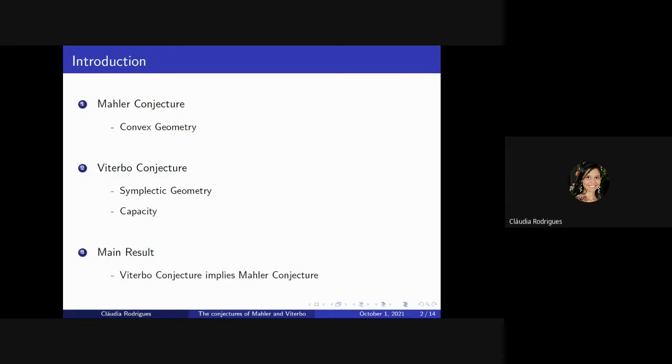We are going to summarize the presentation with three parts. First of all, we will talk about Mahler conjecture. We will define the Mahler volume, and the conjecture states that the minimum possible Mahler volume is attained by a hypercube. The two-dimensional case of the Mahler conjecture has been solved by Mahler in 1939, and the three-dimensional case by Shibata in 2020. The second point here will be to analyze the Viterbo conjecture published by Viterbo in 2000. And for that, we will have to study the following two definitions: symplectic geometry and capacity. Last, but not least, the main result will be the Viterbo conjecture implies the Mahler conjecture.